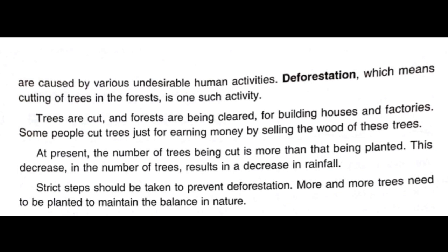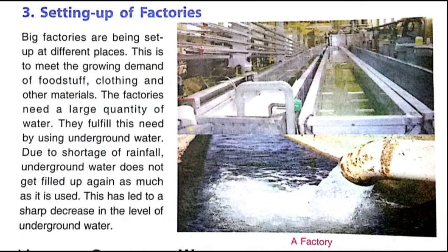The third major factor is the setting up of factories. Big factories are being set up at different places to meet the growing demand of foodstuff, clothing, and other materials. Food processing and textile factories require large amounts of resources including water.